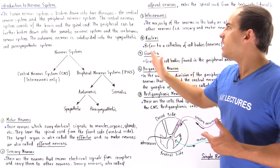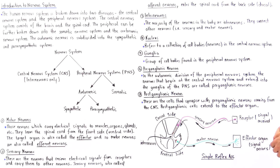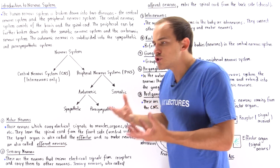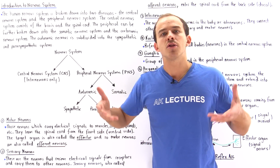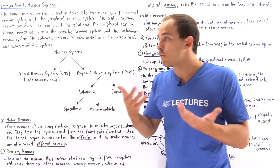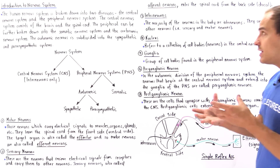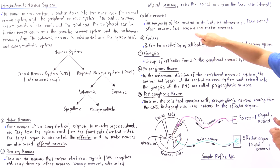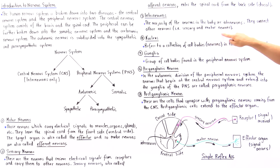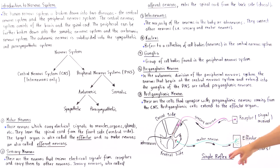Interneurons are simply those neurons that connect other neurons to one another. For example, we can have an interneuron that connects a sensory neuron to a motor neuron, as we'll see in just a moment in our example of the simple reflex arc.